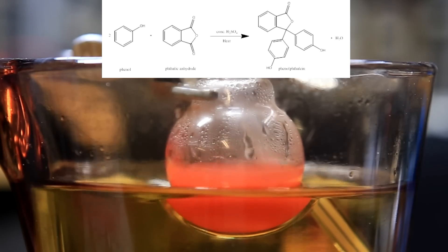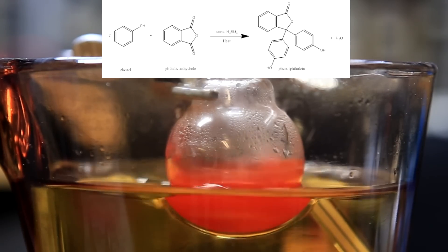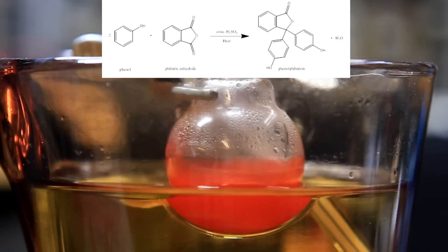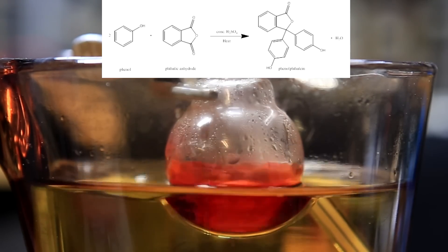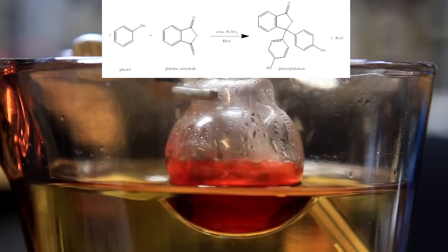The reaction occurring is shown above. Two molecules of phenol react with one molecule of phthalic anhydride to form the phenolphthalein molecule and water. Because this takes place at above 100 degrees Celsius, the reaction is pushed forward by boiling the water away.